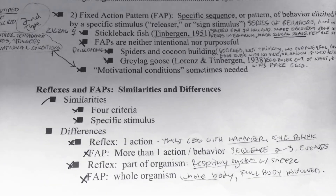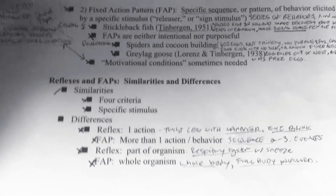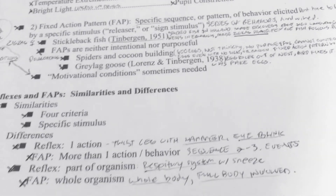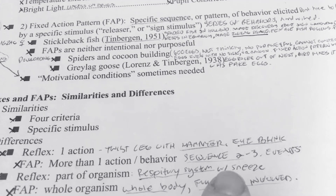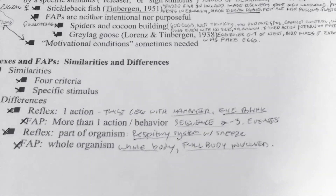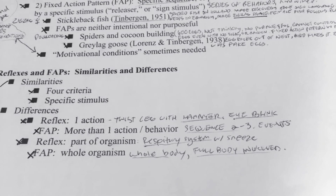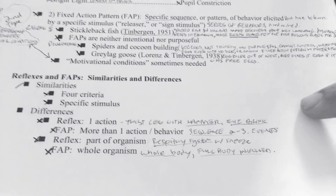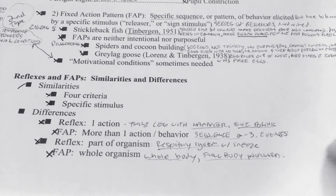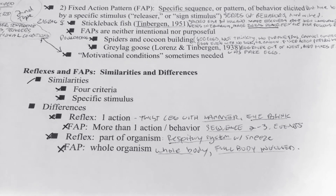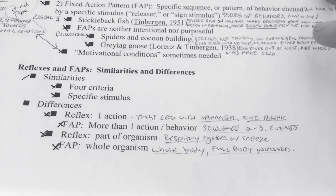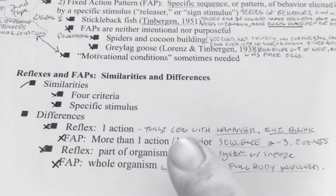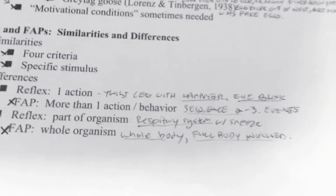The difference between a reflex and a fixed action pattern is that a reflex is one action — like the leg kick or an eye blink, just one thing happening at a time. A fixed action pattern is more than one action — it's a sequence of behaviors, like the stickleback fish zigzagging, the female following him, and then him showing where she'll place her eggs.